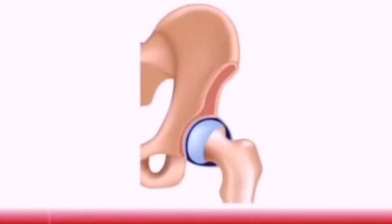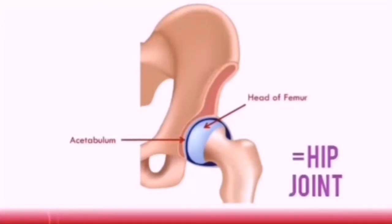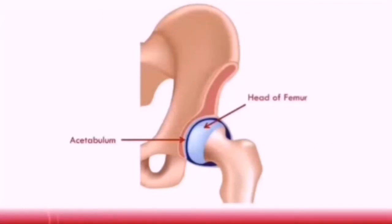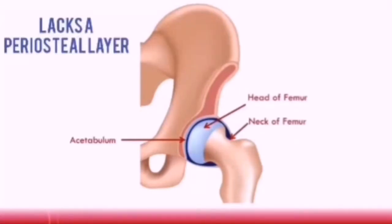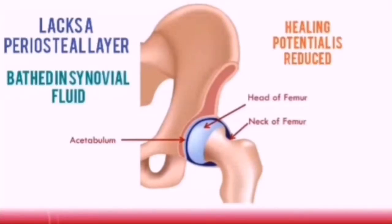Hip fractures can be classified into many different types. To understand this classification system we need to first understand the basic anatomy of the hip joint and the proximal femur. The head of the femur articulates with the pelvis at the acetabulum, forming the hip joint, which is a ball and socket joint. When we talk about hip fractures we are generally referring to fractures of the neck of the femur. Fractures of the neck of the femur are particularly dangerous because the neck of the femur lacks a periosteal layer and is bathed in synovial fluid, so its healing potential is much reduced compared to the rest of the femur.